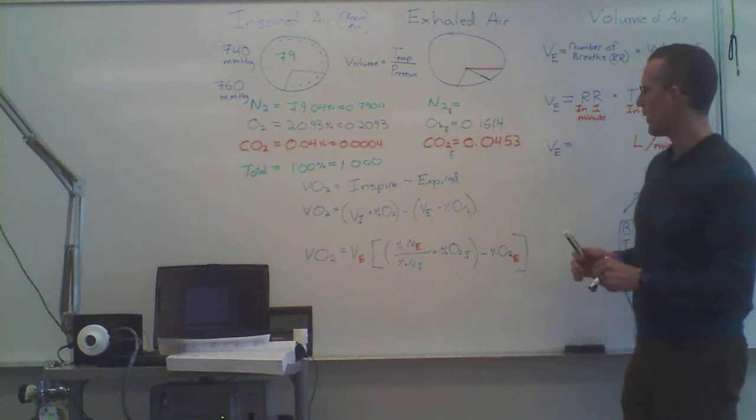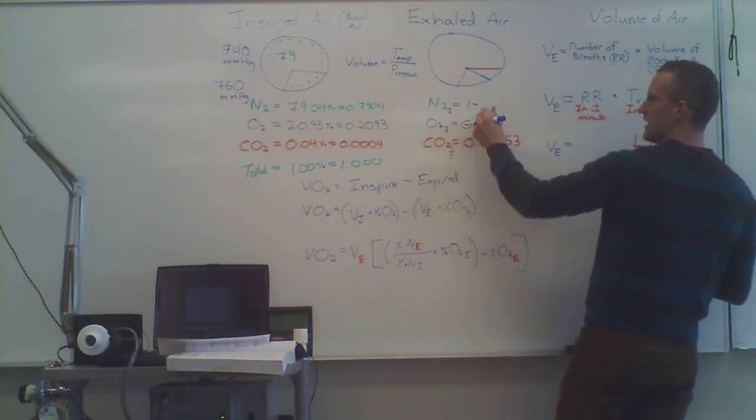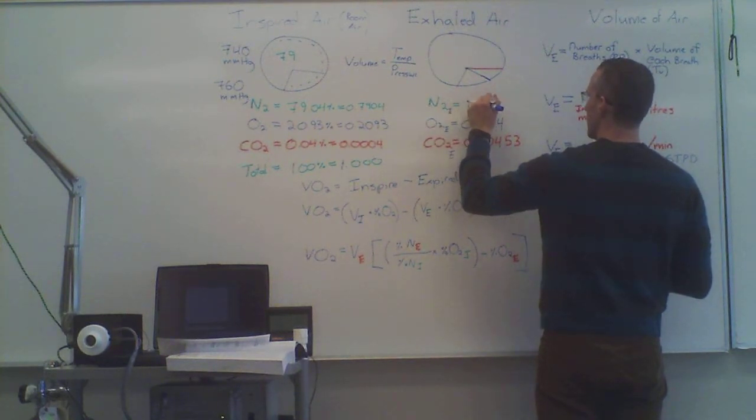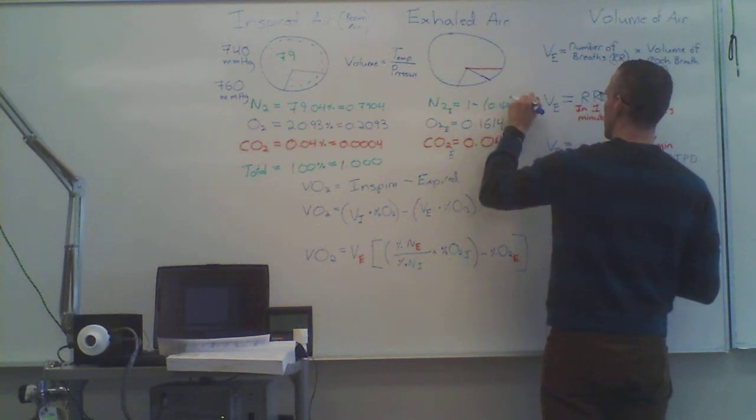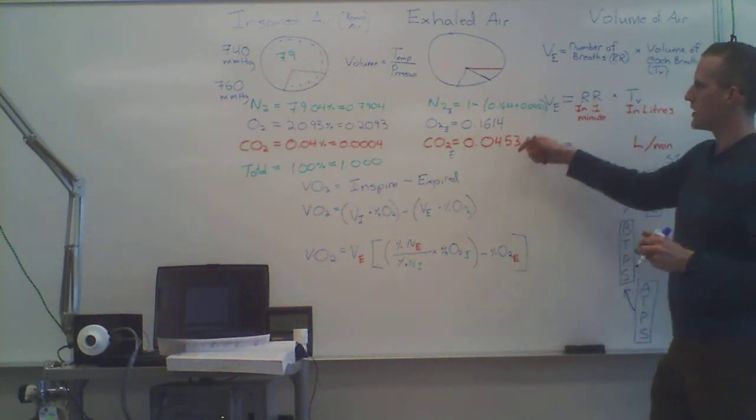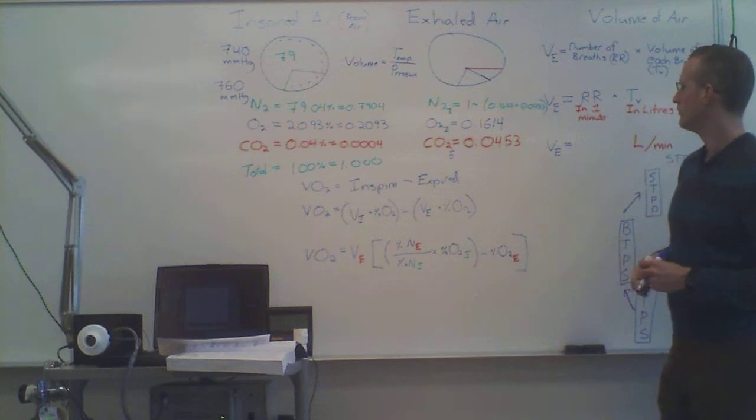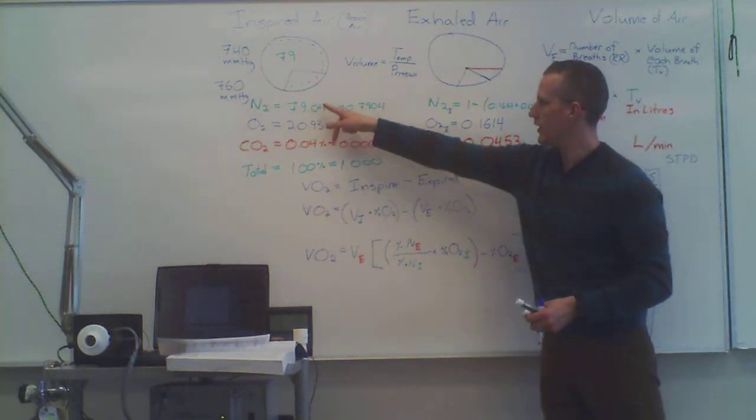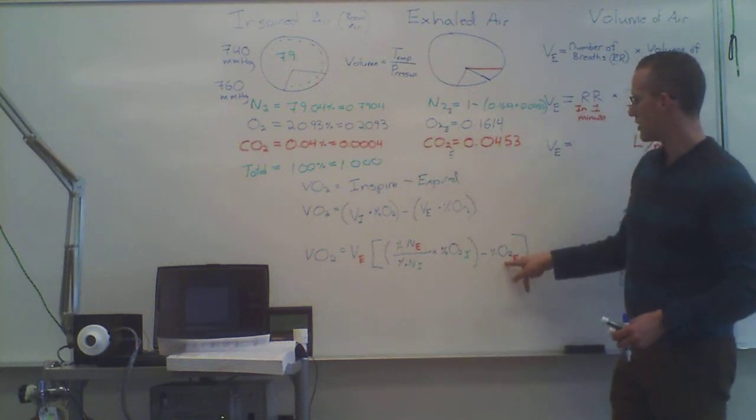Now what about nitrogen? We don't have that number, but we can calculate it by going 1 minus these two together. So in this case, 0.1614 plus 0.0453. And why is that possible? Because if we add them all together, they're always going to equal 1. So now we have nitrogen expired. We have nitrogen inspired. We have oxygen inspired. And we have oxygen expired.